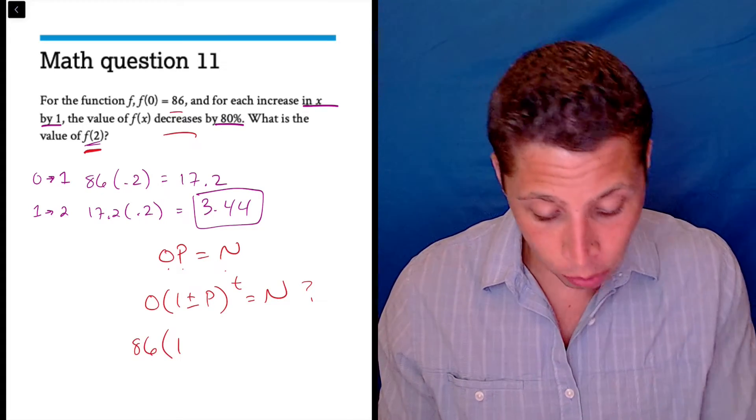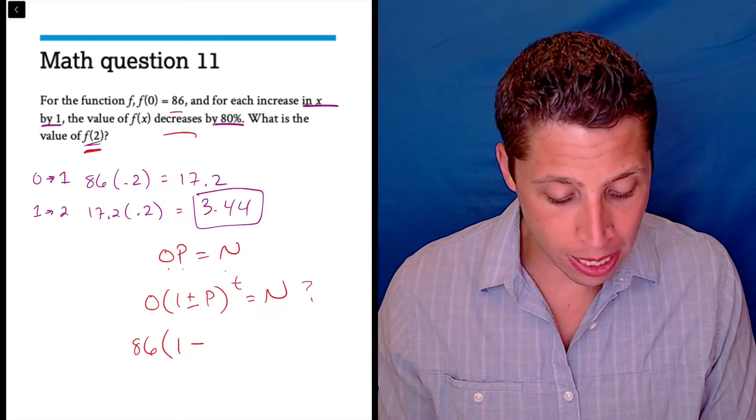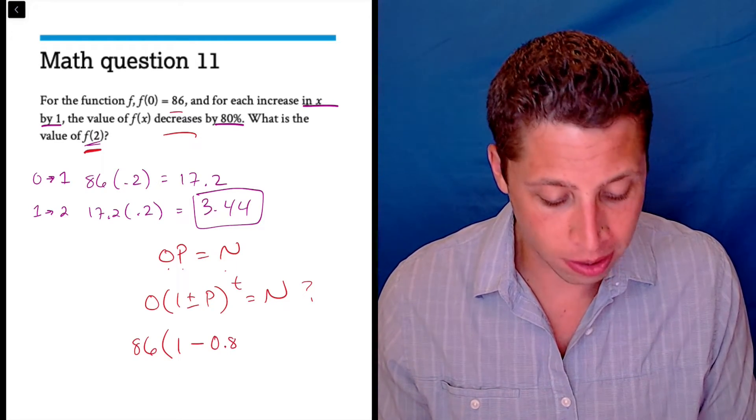And they do say it's a decrease, so it's going to be 1 minus, and then 80% we write that as a decimal, so that's 0.8.